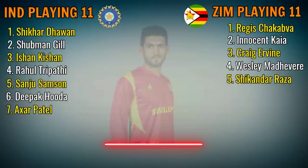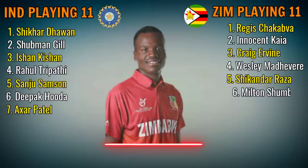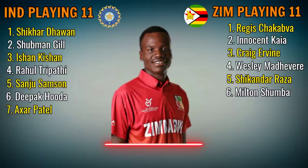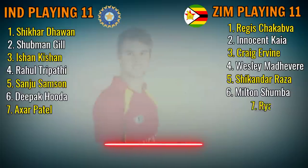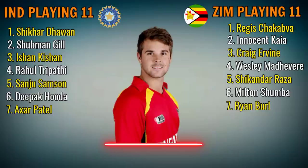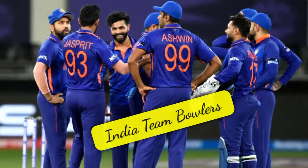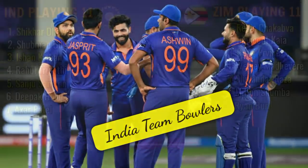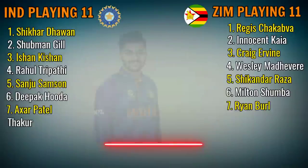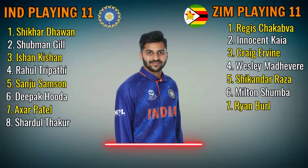Zimbabwe Middle Order: No.7 Milton Shumba, left-handed batsman. No.7 Ryan Burl, all-rounder. India Team Bowlers: No.8 Shardul Thakur, all-rounder.